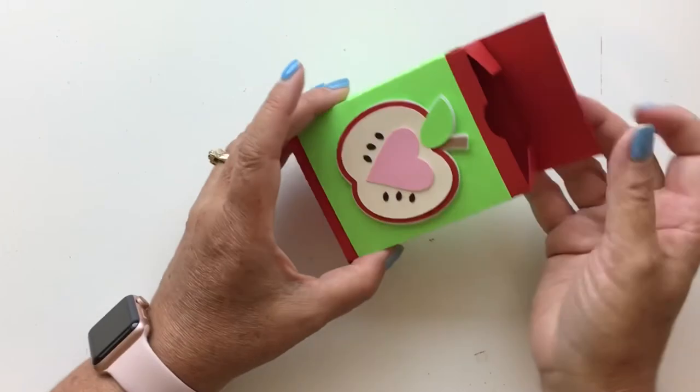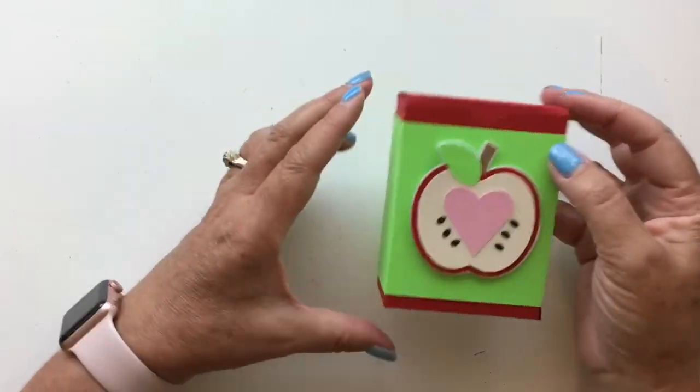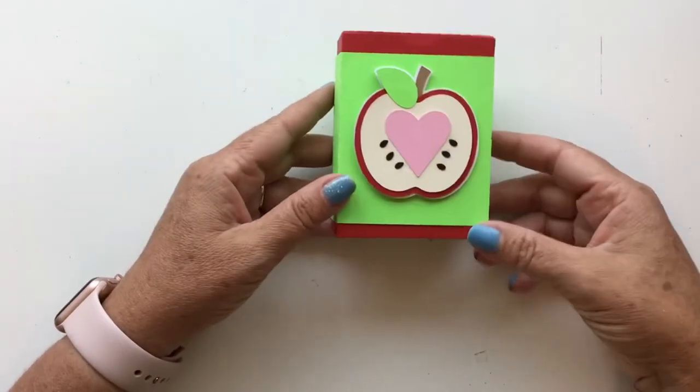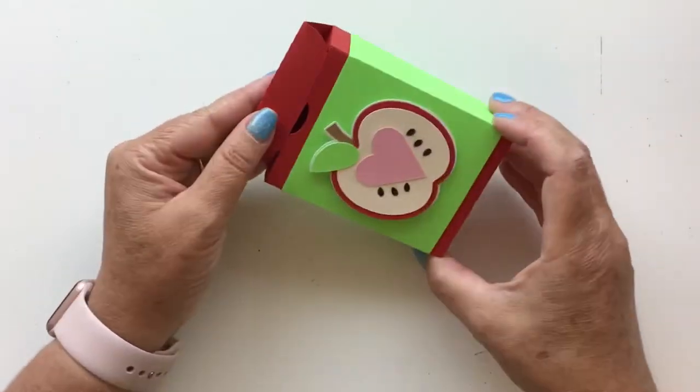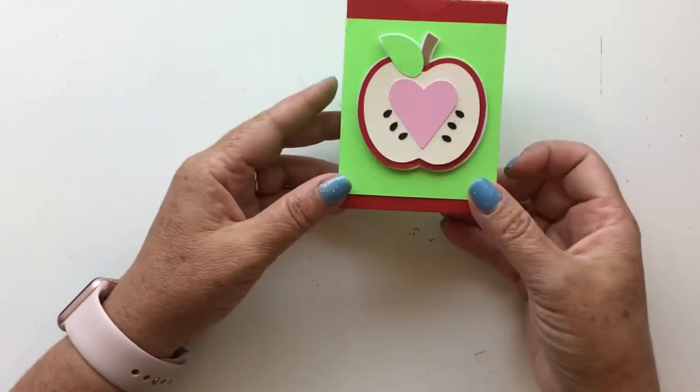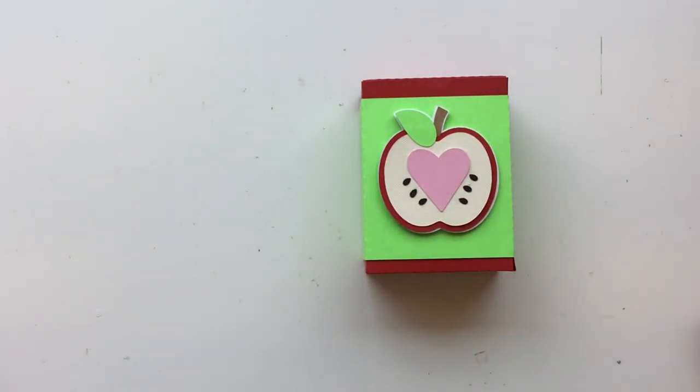Wouldn't that be fun with like a ribbon tied around it or a tag tied onto it? Put any kind of little treat in there that you want for your teacher or your student that's going back to school. This would be fun to slip in their lunch box on that first day so they have a little treat that you're thinking of them. Anyway, that's all there is to that box. Thank you for joining me. I hope you'll hit subscribe down below so you don't miss any of my videos, and have a great day.